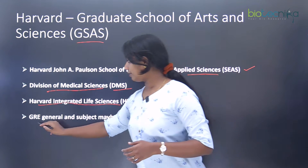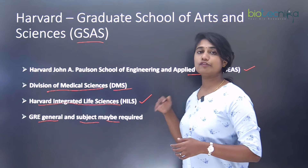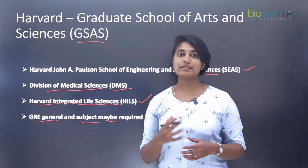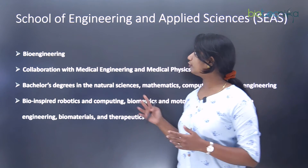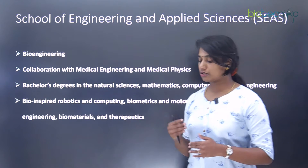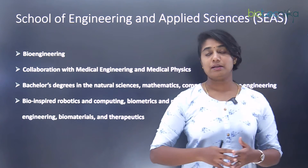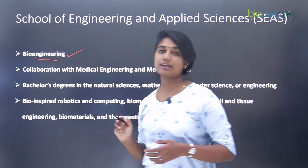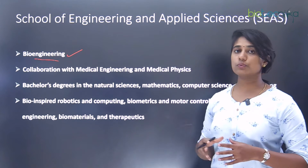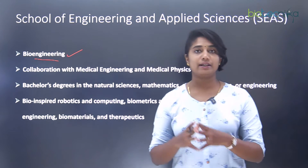The GRE general as well as subject scores may be required in a few of these departments or labs. The first school we'll talk about is the School of Engineering and Applied Sciences. Most subdivisions are on the engineering side, but bioengineering is the relevant area for bioscience or life science students. If you want to do a PhD in bioengineering, this is the department you will be connected with.